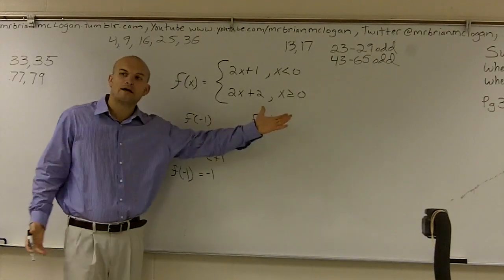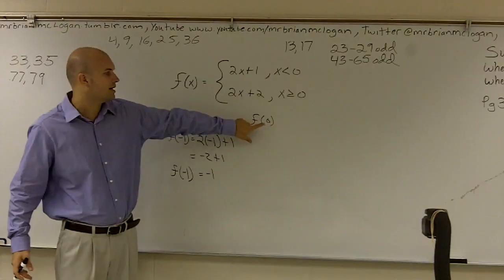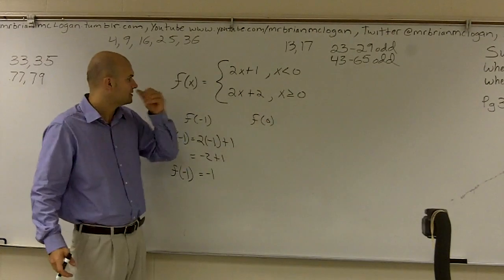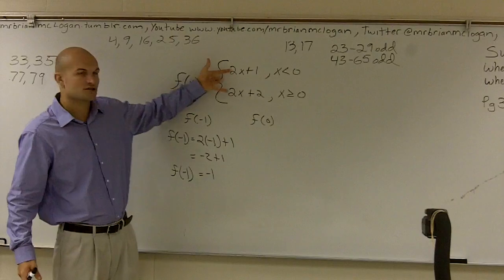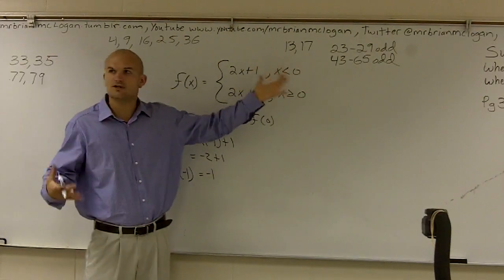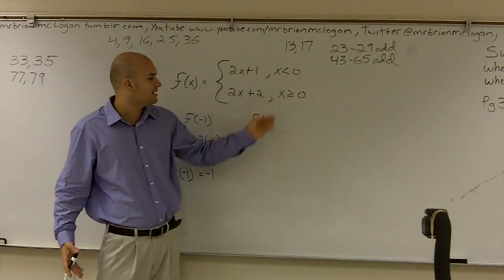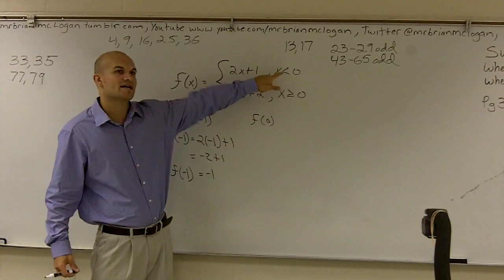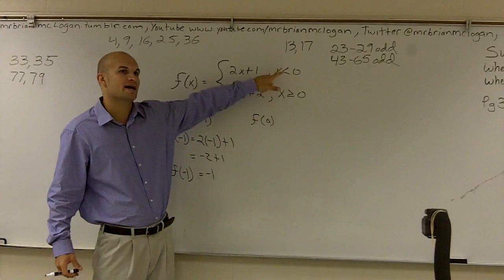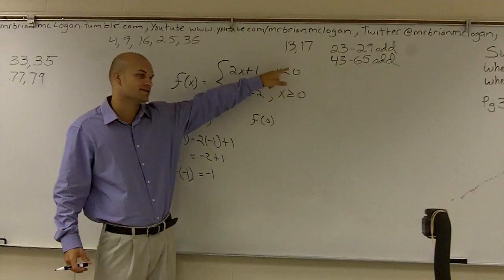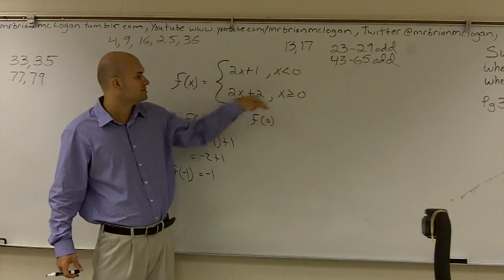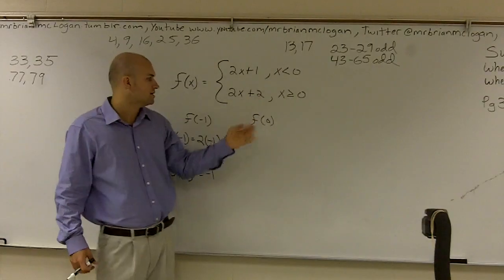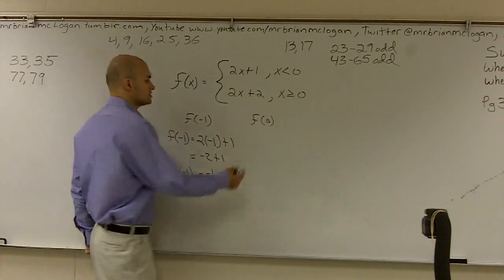Next, let's evaluate the piecewise function for the value of 0. Again, I need to look at my two functions and their constraints and ask which function do I use for 0. The first function applies only when x values are less than 0, and this second function applies when x values are equal to 0 or greater. So therefore, I'm going to use this function.